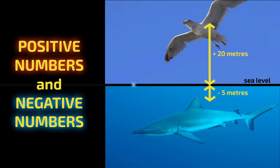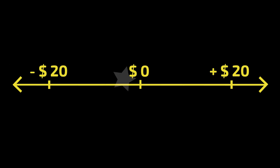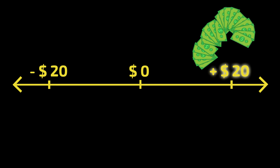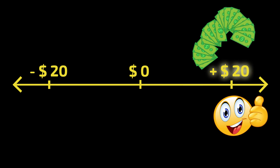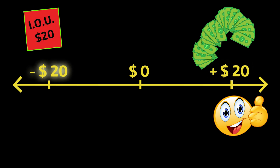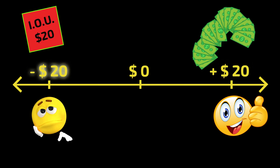These are examples of positive and negative numbers. Now let's see some examples with money. If I have $20, that's positive 20 — I'm happy. But if I owe someone $20, that's negative 20 — I'm sad.